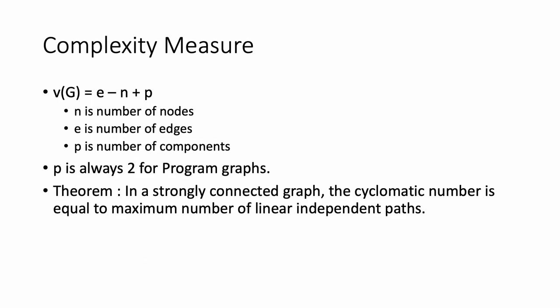We can measure the complexity of a program in two ways. The first is through a mathematical formula: V(G) = E - N + P, where V is the cyclomatic complexity, G is the graph of the program, E is the number of edges, N is the number of nodes, and P is the number of connected components.